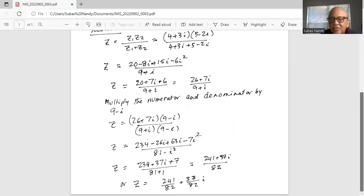So 26 times 9 is 234. First term outside is 26 times minus i is minus 26i. Inside is 7 times 9 plus 63i. And then the last term 7i times minus i is minus 7i squared. In the denominator, we have a plus b times a minus b, which is 81 minus i squared.